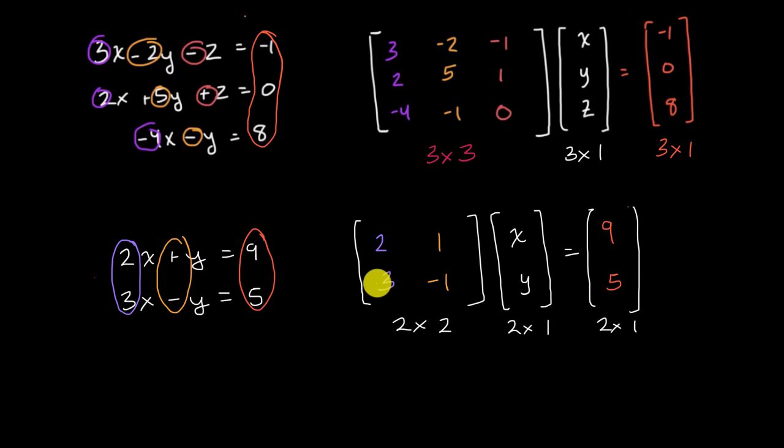And I encourage you, multiply this out. Multiply this matrix times this vector. And when you do that, and you still set up this equality, you're going to see that it essentially turns into this exact same system of two equations and two unknowns.